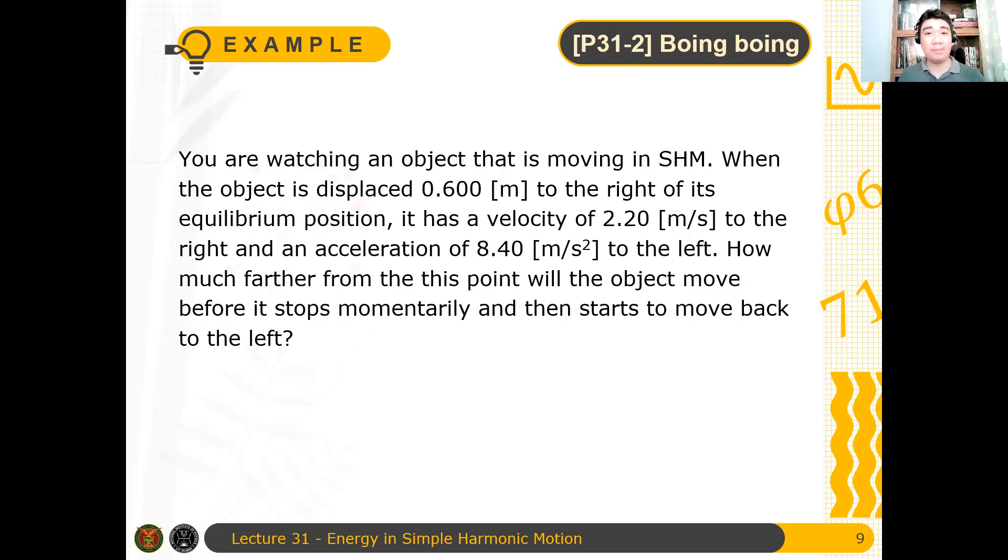So what we want to determine in this problem is the total distance for this object to reach that particular point where it will momentarily stop and it will return to its original position. It starts to move back. So what is that position? What is that position before it stops momentarily and then it starts to move back to the left?